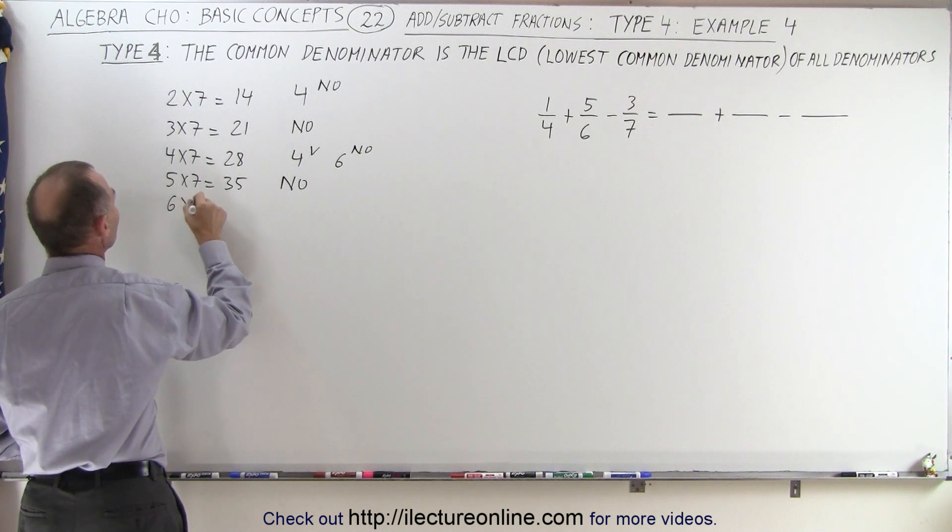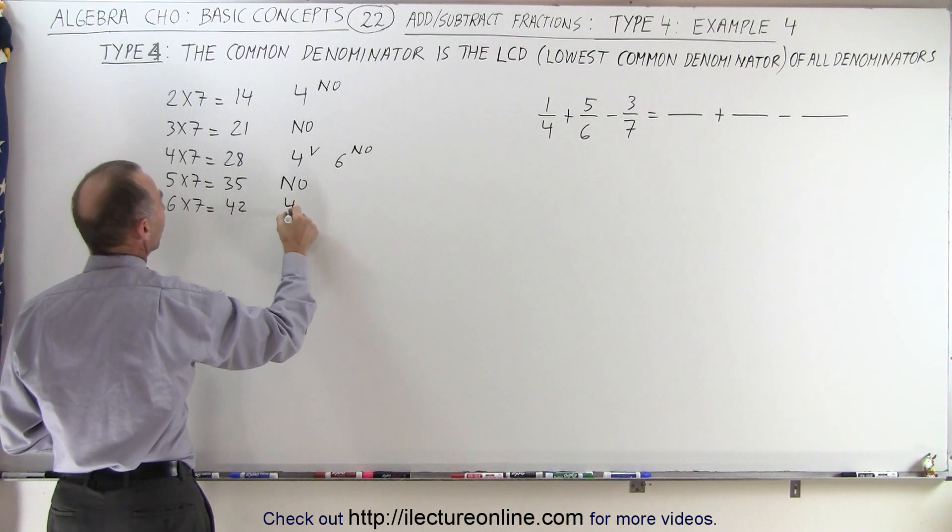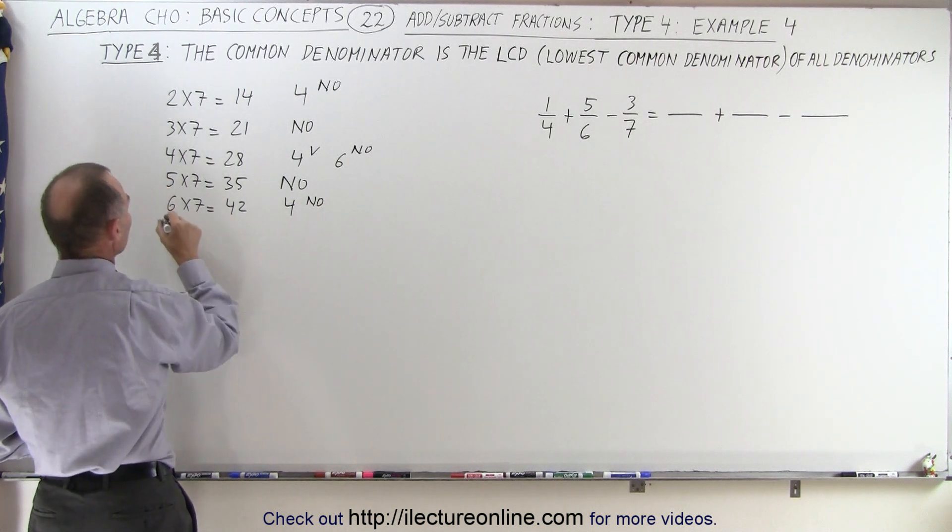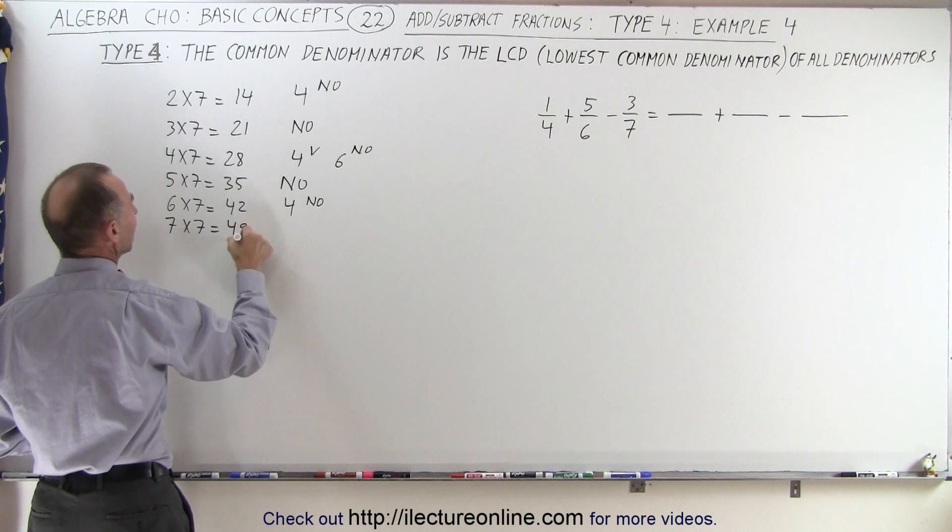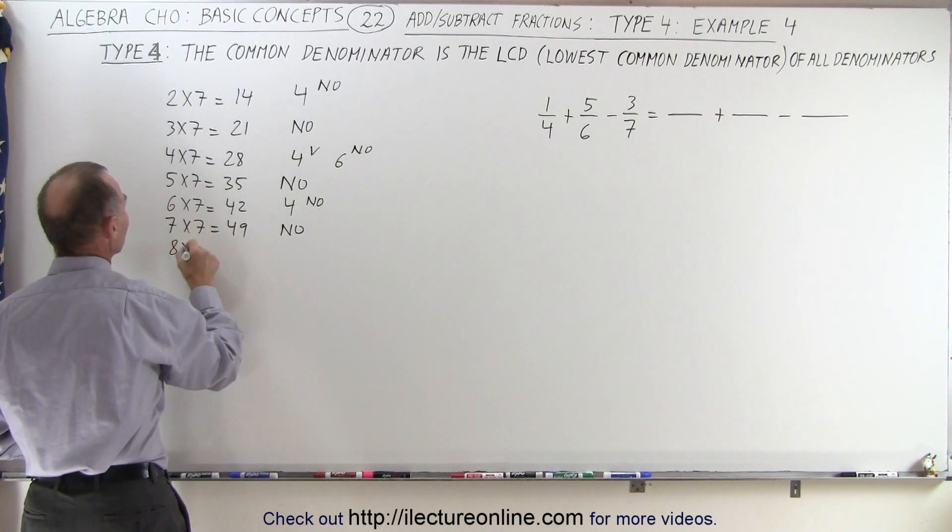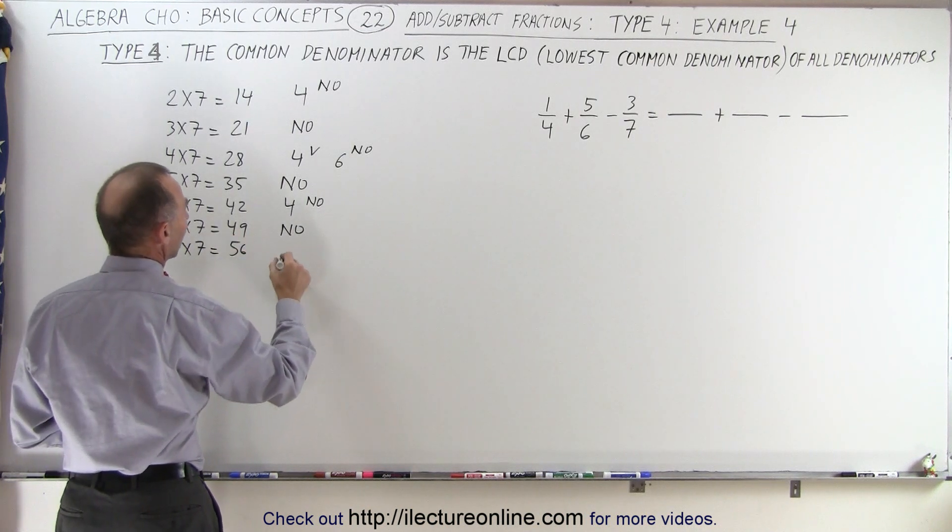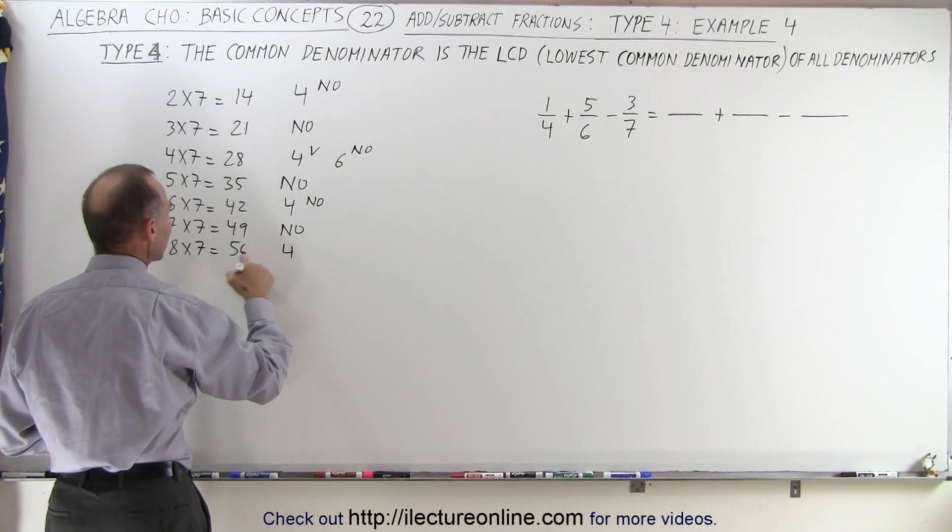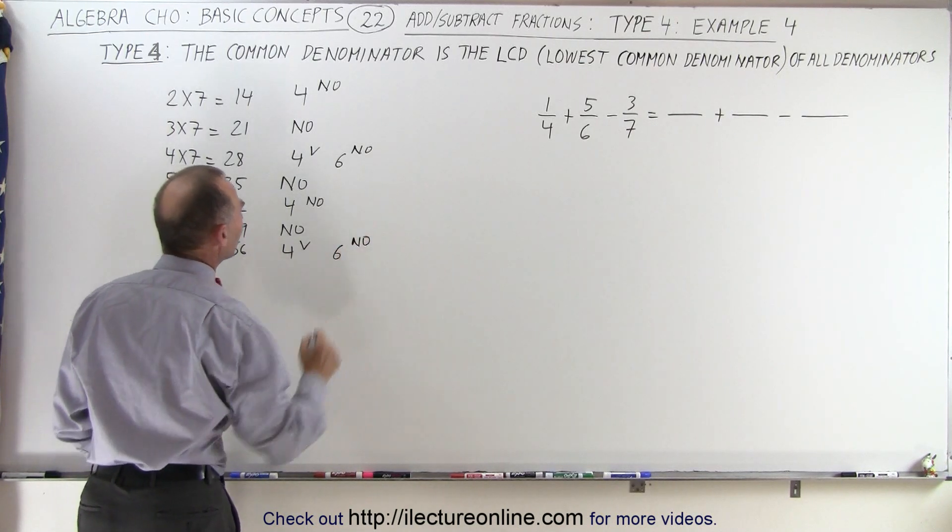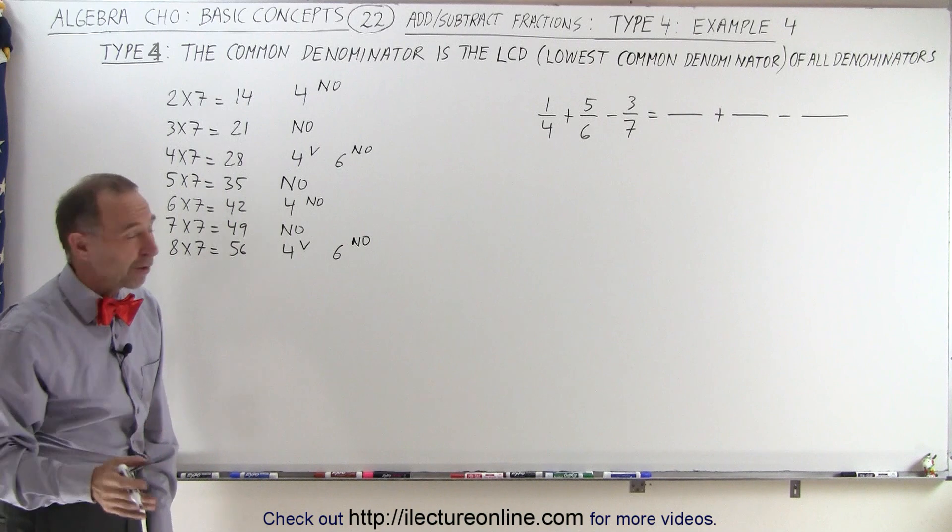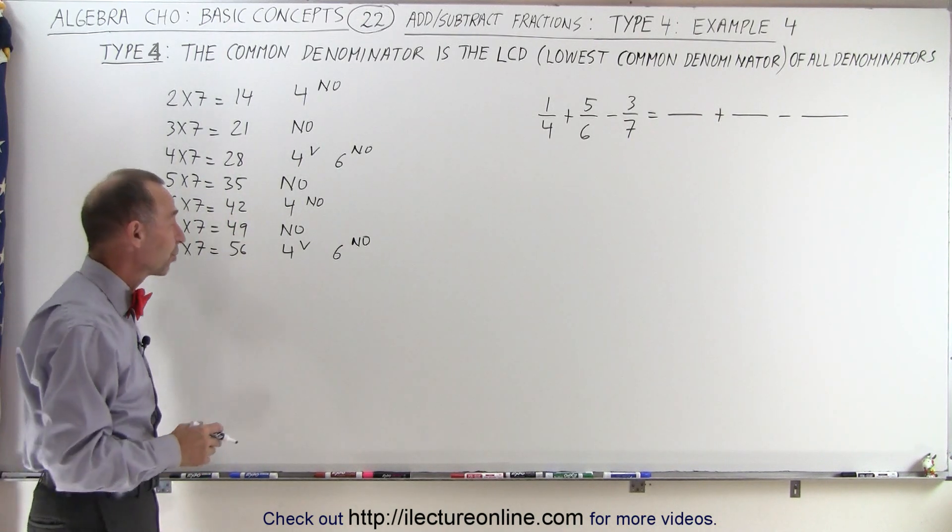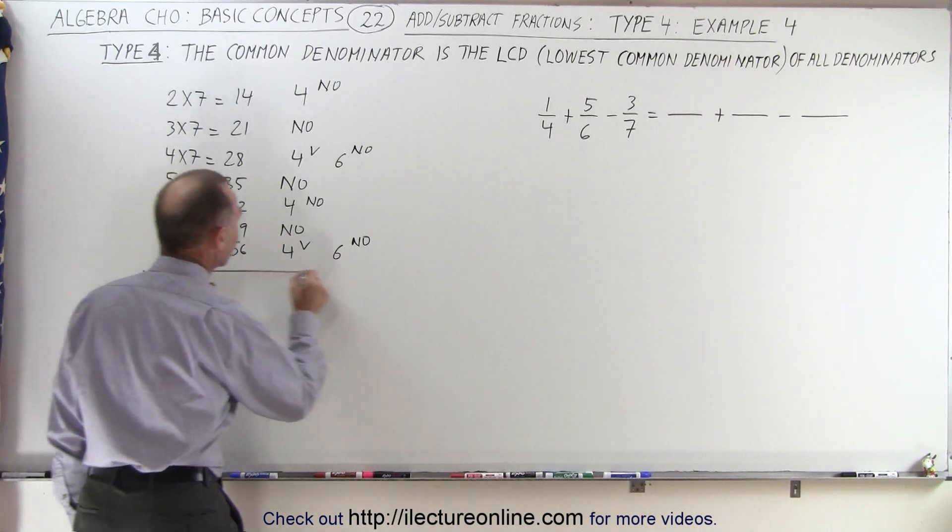How about 6 times 7? That would be 42, and 4 would be no because 4 does not fit evenly into 42. 7 times 7 is 49, that's an odd number, so the answer is no. And 8 times 7, which is equal to 56, and the number 4 does fit evenly into 56, but the number 6 does not fit evenly into 56. And so you can see that this method becomes a very laborious method, and you just keep going and going, and who knows what the final answer is. So maybe we should try the next method.